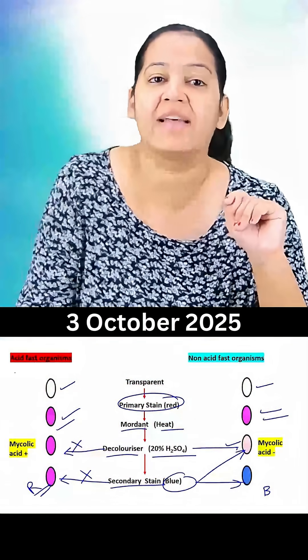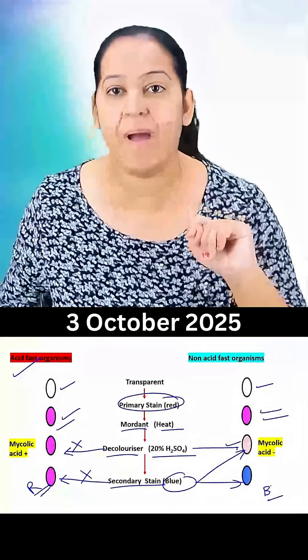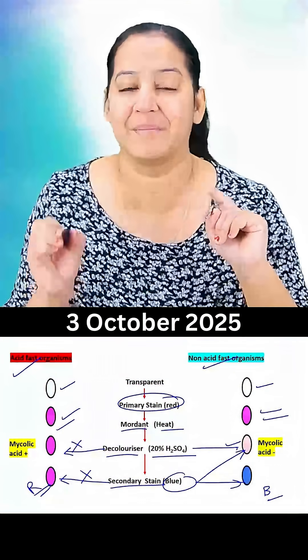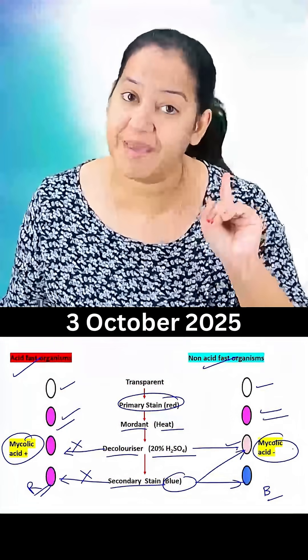So the red bacteria are acid-fast organisms and the blue bacteria are non acid-fast organisms. It is the myconic acid in the cell wall which makes the difference.